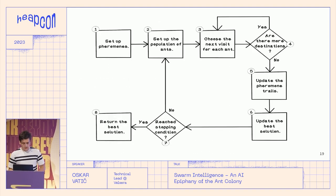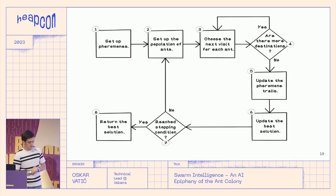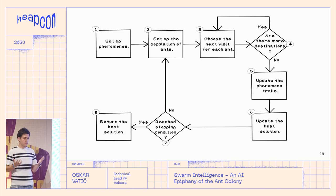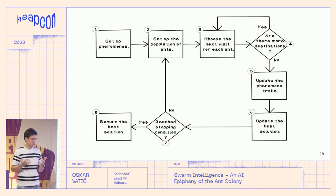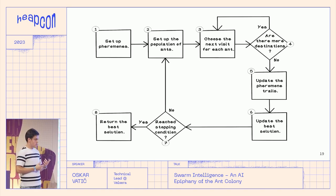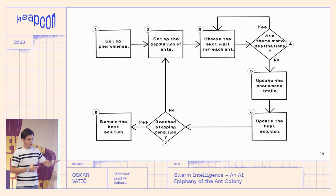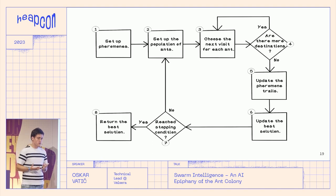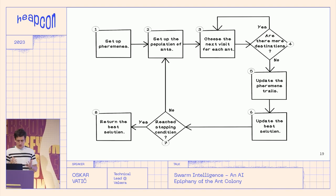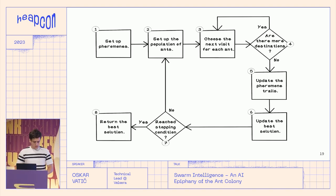To summarize all the steps: initially you want to set up your pheromones in your graph to have the same value, to have zero bias between different paths. You want to set up your colony and ant population, then let them run around your graph. They'll choose their next node either by doing the math and calculating probabilities, or by randomly running around — which helps you fight the discrepancy between globally best and locally best solutions. Then you do that long enough until you're happy with your solution, either because you've run out of money or you're really happy with the result. At the end, you return whatever you found to be the best.